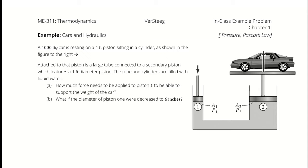A 4,000-pound-force car is resting on a 4-foot piston sitting in a cylinder as shown in the figure to the right. Attached to that piston is a large tube connected to a secondary piston which features a 1-foot diameter piston. The tube and cylinders are filled with liquid water.